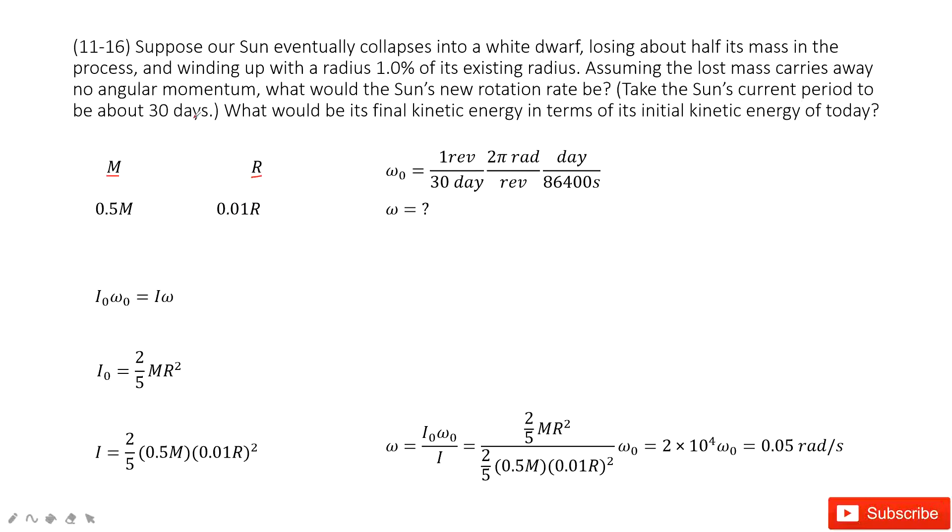The Sun's current period is 30 days. We can get the angular velocity: one revolution for 30 days, convert the unit to radians per second.